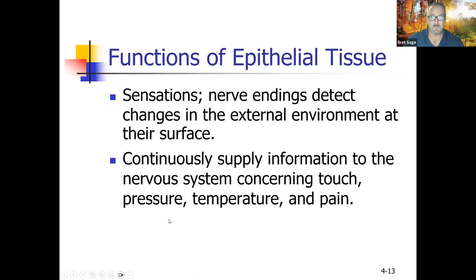Epithelial tissue can also provide sensations. Nerve endings detect changes in the external environment at their surface, continually supplying information to the nervous system concerning touch, pressure, temperature, and pain. That's one of the reasons we have epithelial tissue — to sense our environment.